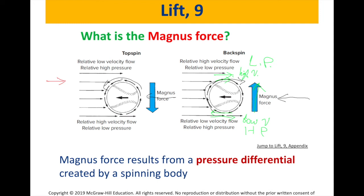On the topspin, we have the opposite scenario. The top part has spinning in the opposite direction of the fluid flow, giving low velocity there, while on the bottom they are both in the same direction, giving high velocity. This means low pressure on top and high pressure on the bottom, so the Magnus force goes from high to low — downward. The object will go down over time. This happens as a result of the pressure differential created by a spinning body between the top and bottom of the object.